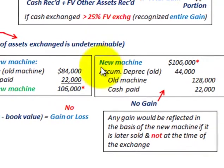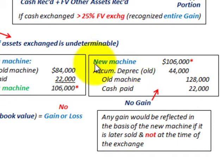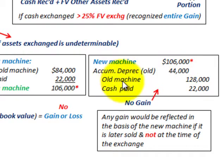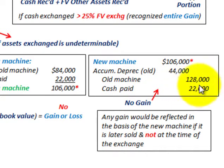To record this transaction for case two, we record the new machine at the basis we determined: $106,000. Then we remove the old machine — debit accumulated depreciation $44,000, credit the old machine at its original cost of $128,000, and reduce cash by $22,000.